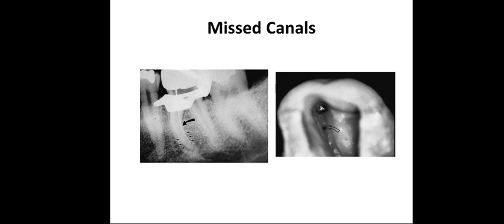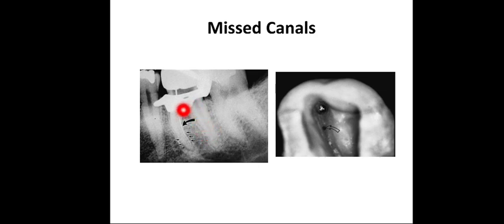Good access opening and de-roofing of the pulp chamber must be done in order to observe all canal orifices for complete pulp extirpation. This error can be prevented by use of a microscope, which simplifies vision and aids exploration of the canal during treatment. Radiographs taken from different directions are also useful, as they reveal the pulp anatomy, root canal configuration, and number of roots.